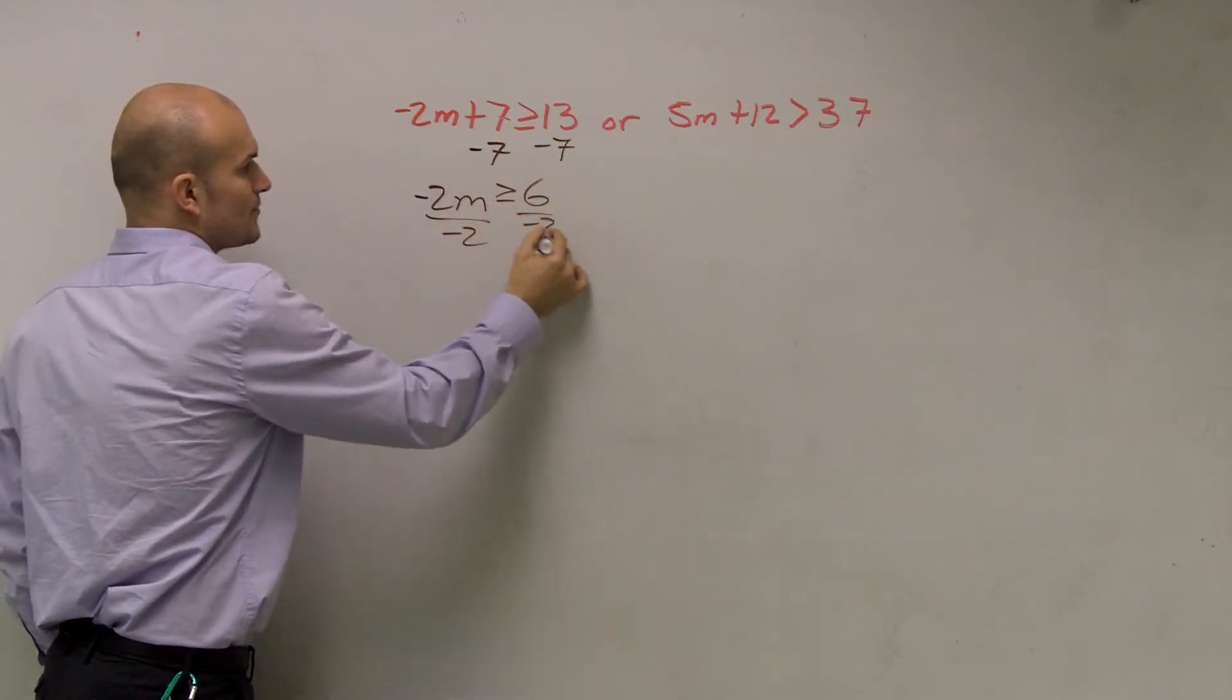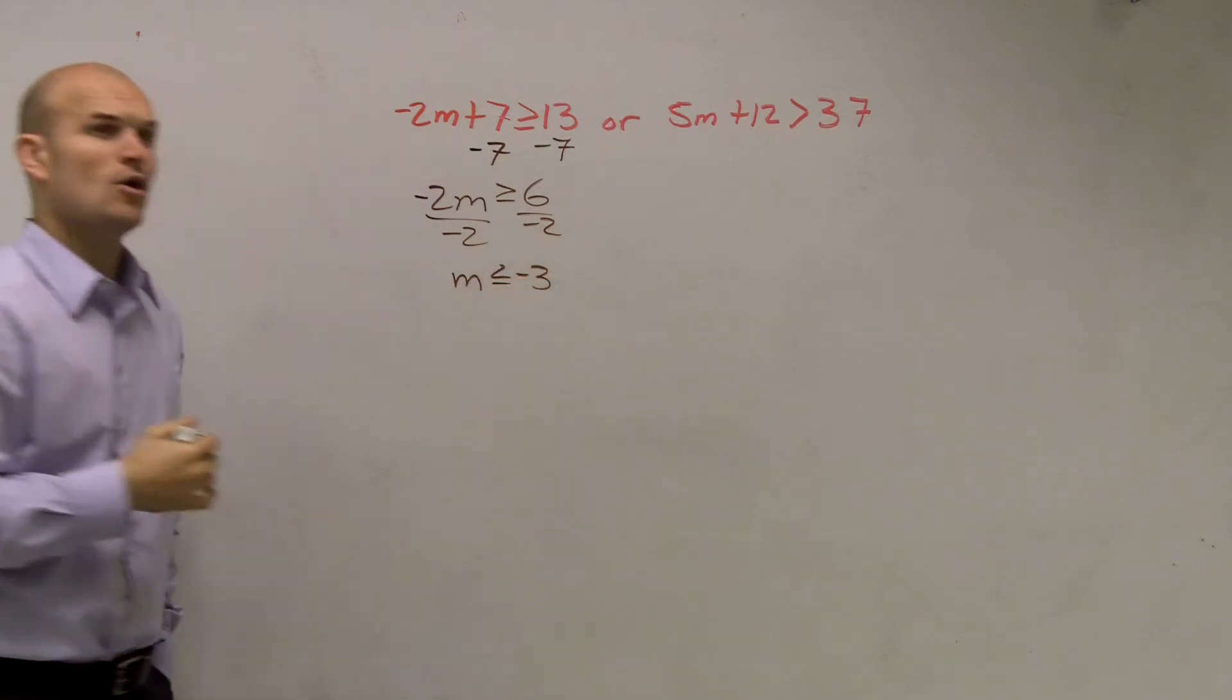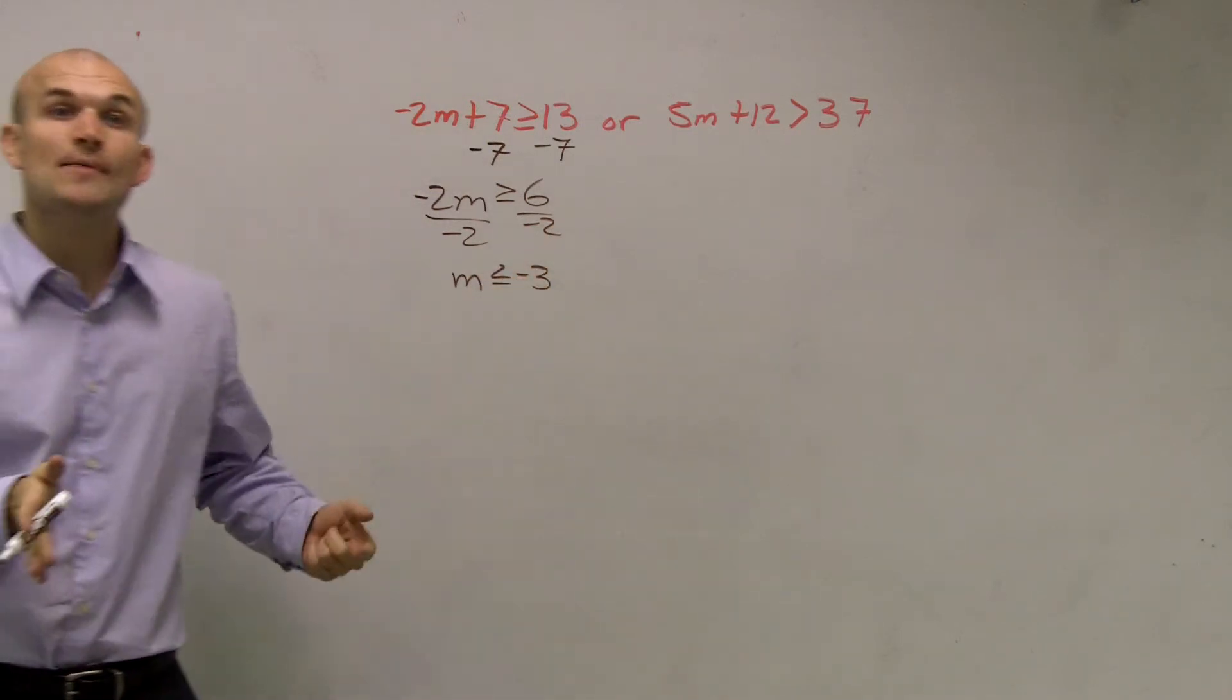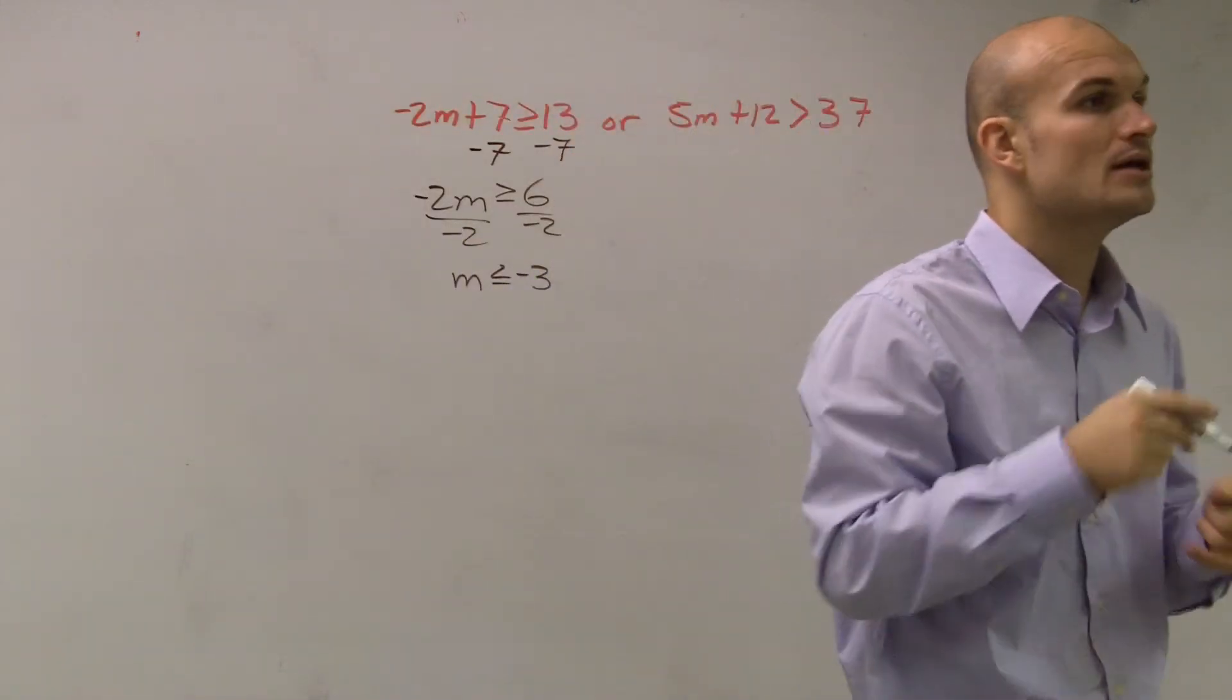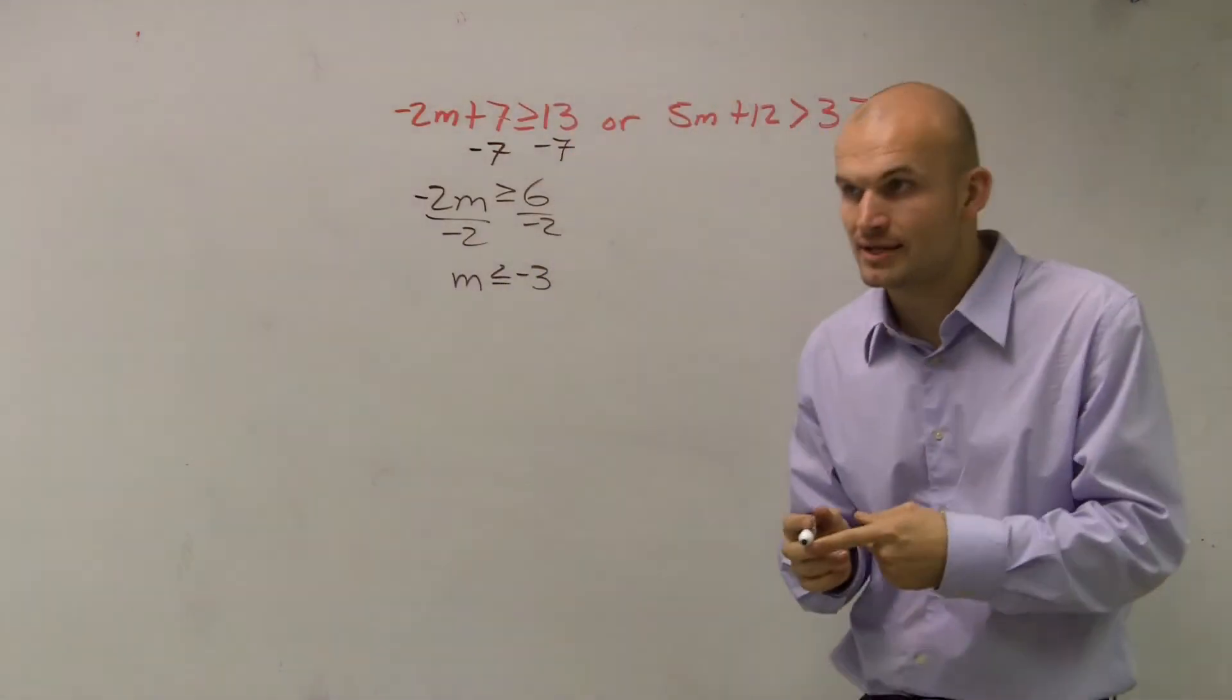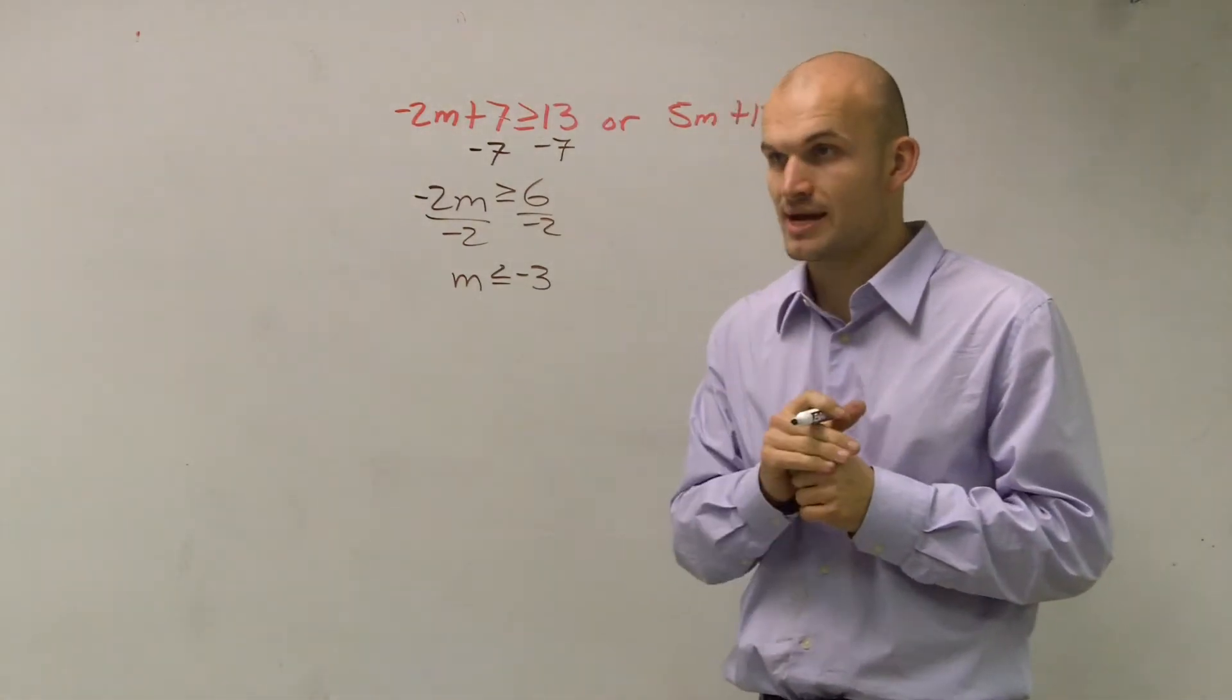Divide by negative 2, and I have m is now less than or equal to negative 3. Why is it now less than or equal to? Because remember, write this down if you keep forgetting it: whenever you divide or multiply by a negative number, we need to make sure we flip the sign.